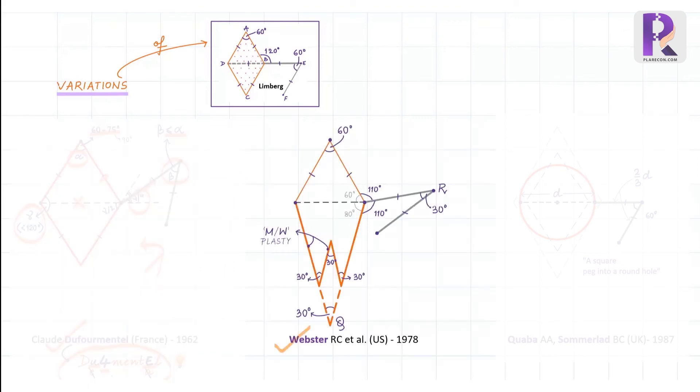Let's now move on to the next modification, which was by Webster. So in Limburg's flap, there are two points along which rotation of tissue happens. One is at the base of the flap at C and the other one is at E, where the primary closure of donor defect happens.